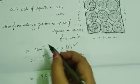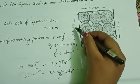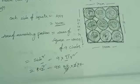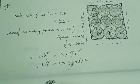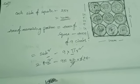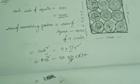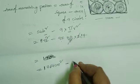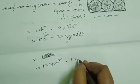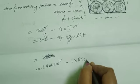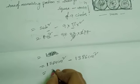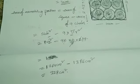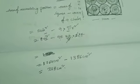Each side of the square is 42 cm, so 42² = 1,764 cm². Then: 9 × 22 × 7 = 1,386 cm². Therefore, area of remaining portion = 1,764 − 1,386 = 378 cm². The area of the remaining portion equals 378 cm².